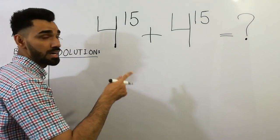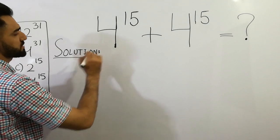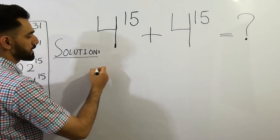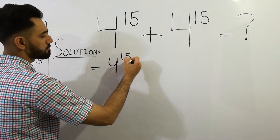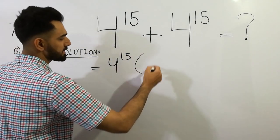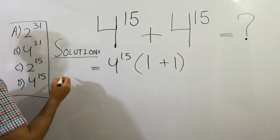Let's get the exact solution of this question. First of all, factor out 4 raised to power 15 to get the value 1 plus 1. That's the first step.